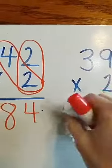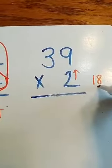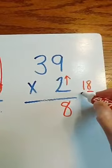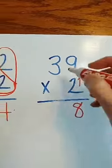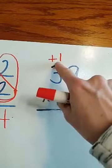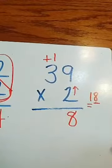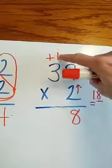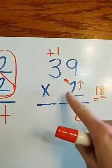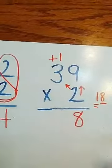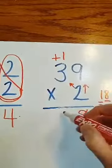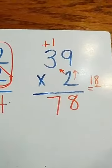Just like when we add, we put the 1s place, which is the 8, down. We carry our 10s place up above the 10s place and add it in. Remember I told you yesterday, I always like to put that plus 1 to remember I'm not multiplying that number, I'm adding that number. So now I'm going to multiply my 10s place, and I multiply first. 2 times 3 is 6. Add one more. 7. And I found my answer, 78.